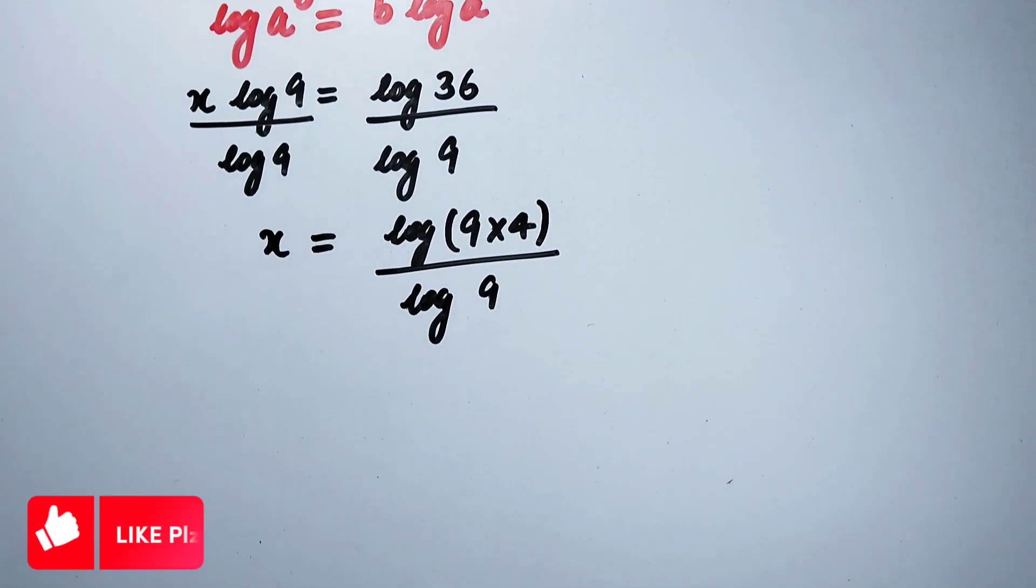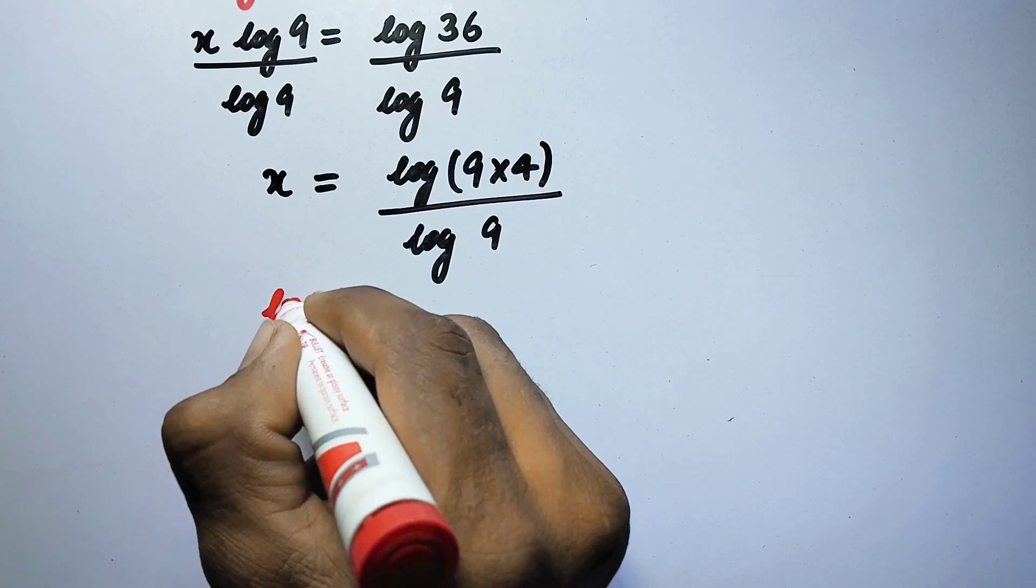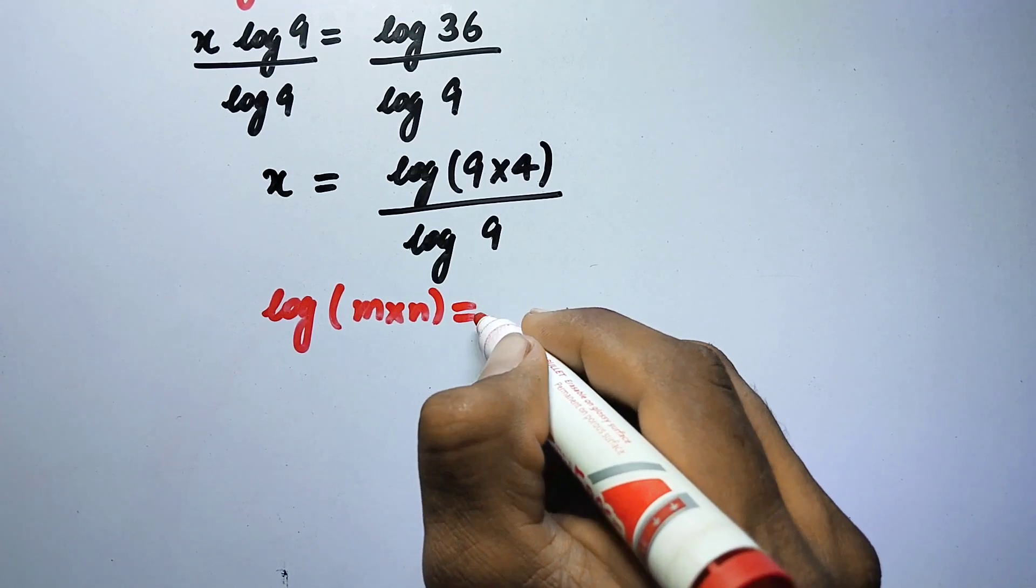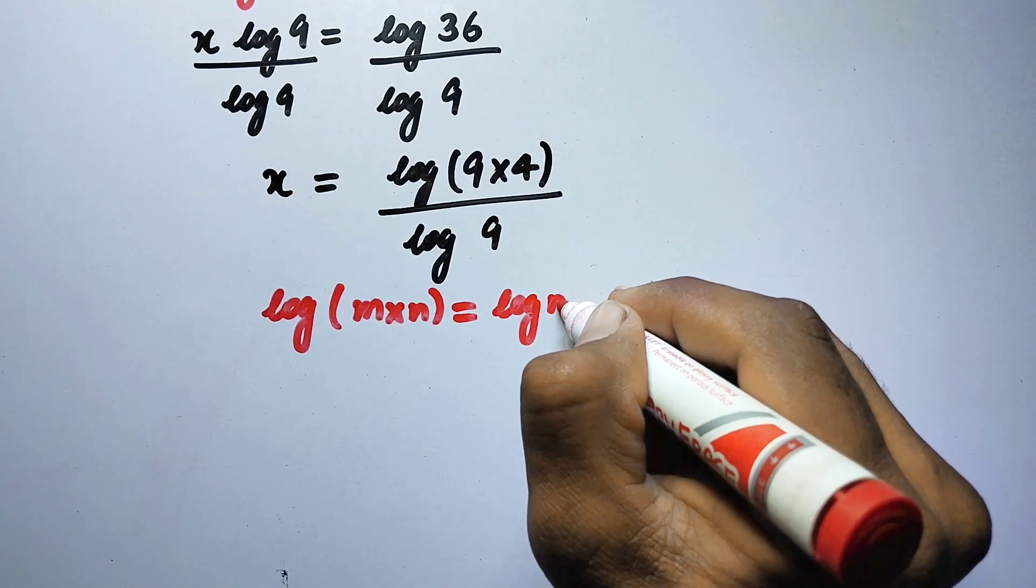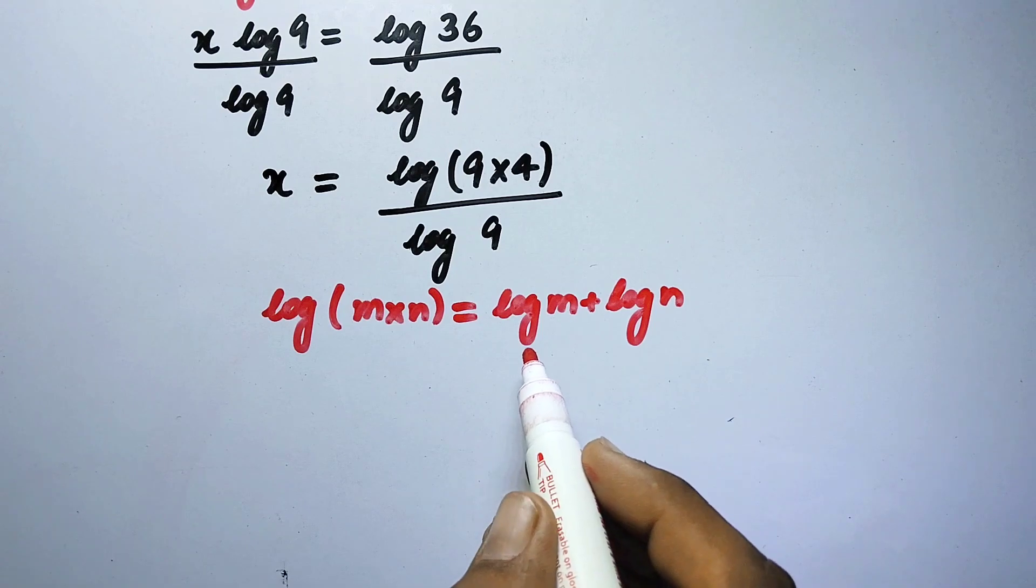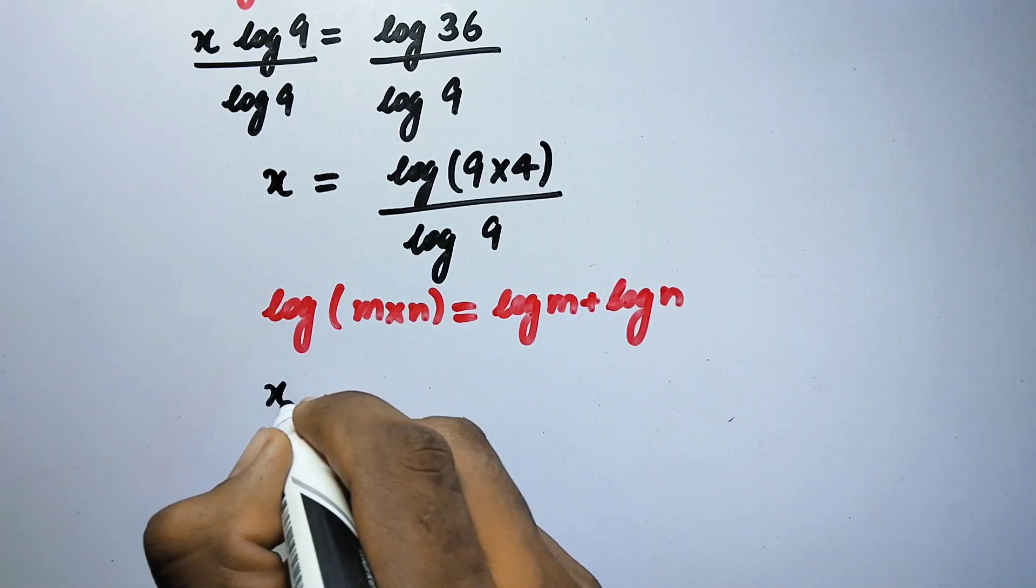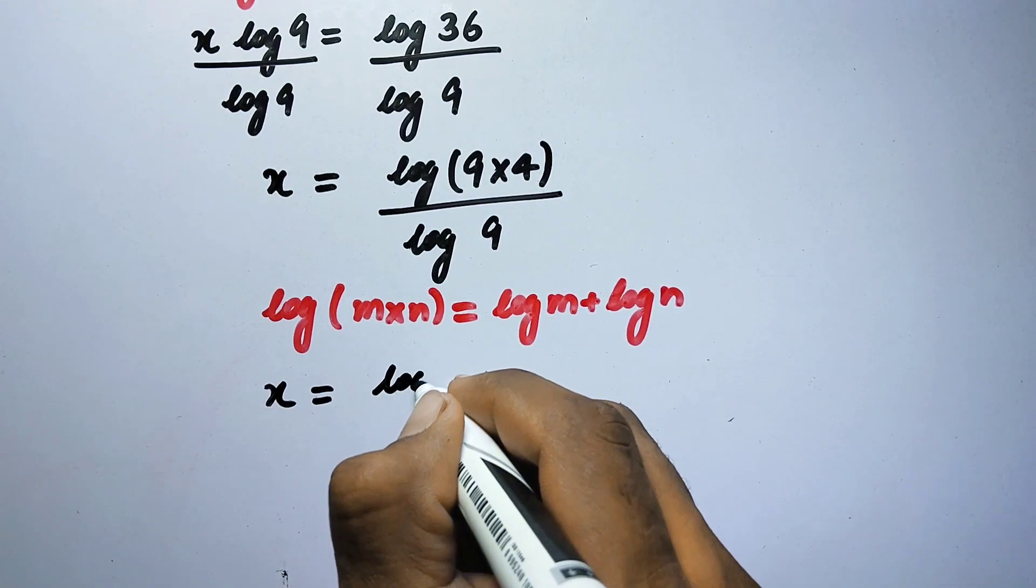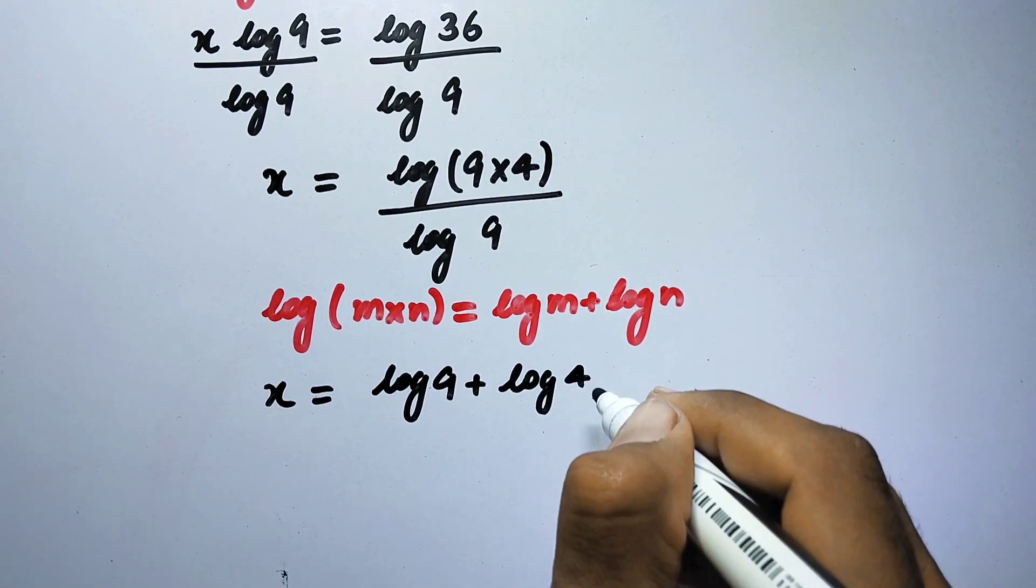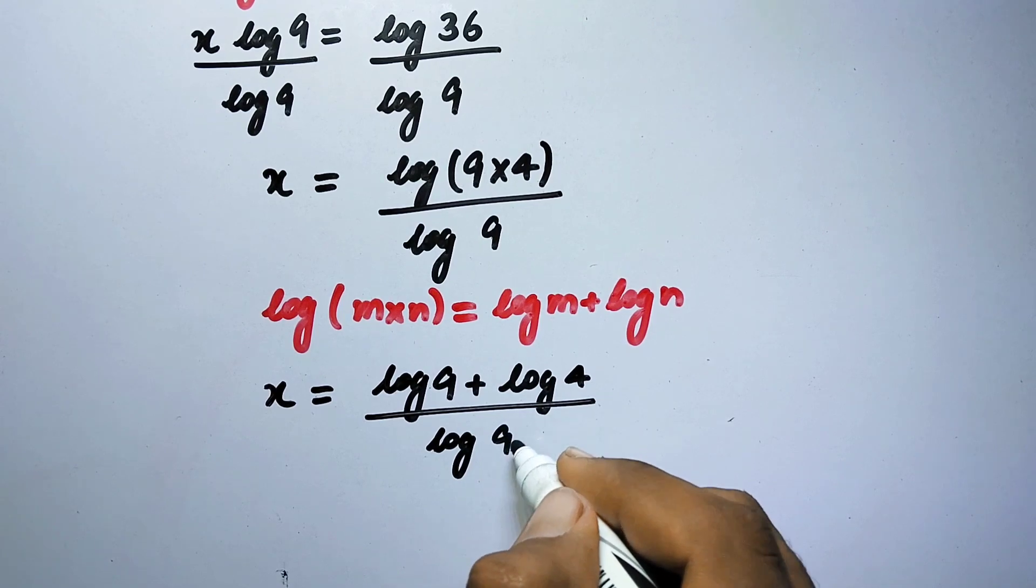And now here we will follow another identity of log, that is: log of m multiplied by n is equal to log of m plus log of n. So by following this property here we will write x equal to log of 9 plus log of 4 divided by log of 9.